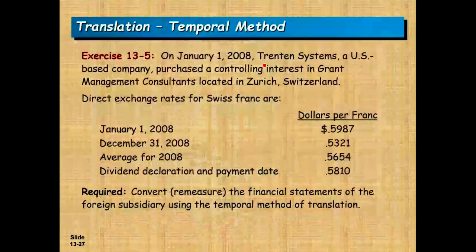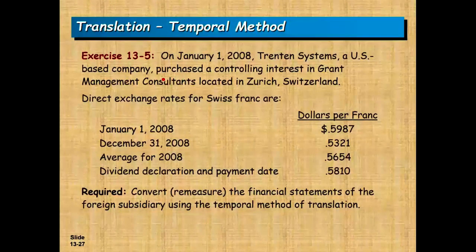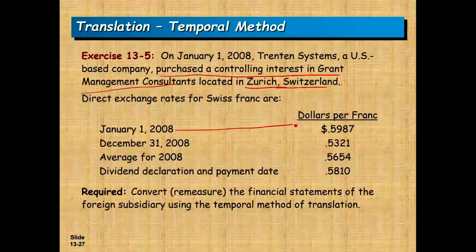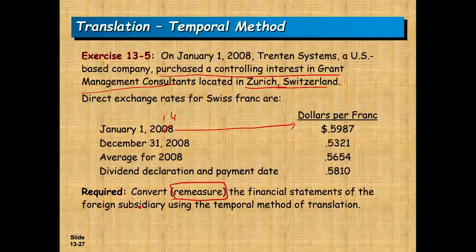On January 1st, T-System, a US-based company, purchased a controlling interest in G Management Consultant located in Zurich, Switzerland. We are given the direct exchange rate as of January 1st, 2008 (0.98), December 31st, 2008 (0.5321), the average rate for 2008 (0.5654), and the dividend declaration/payment date rate (0.58). The task is to convert the financial statements of the foreign subsidiary using the temporal method of translation.